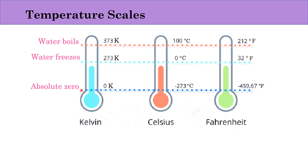Usually in the US, Canada, and similar countries, degree Fahrenheit is preferred. In other countries, degree Celsius is usually preferred. Kelvin scales are used where we need to apply fundamental laws.